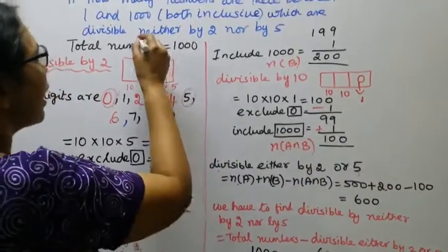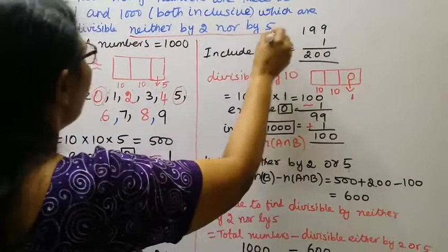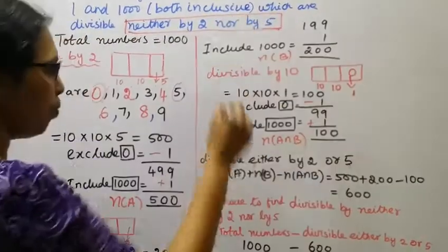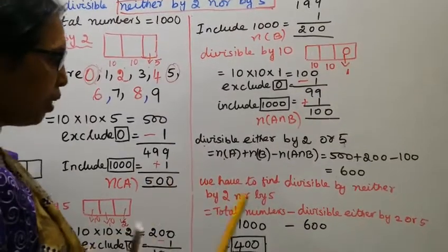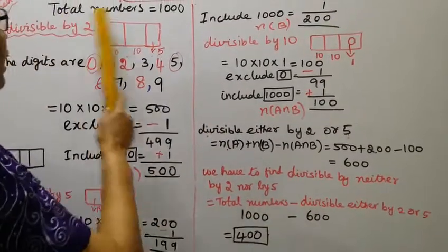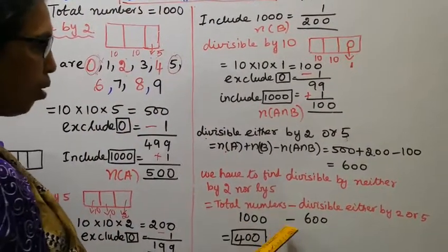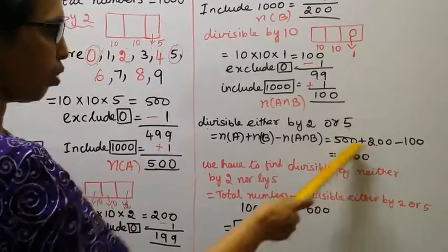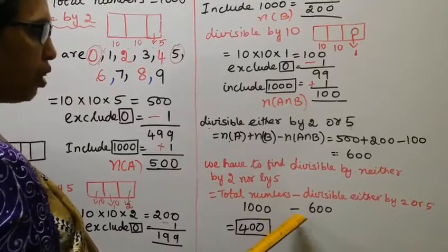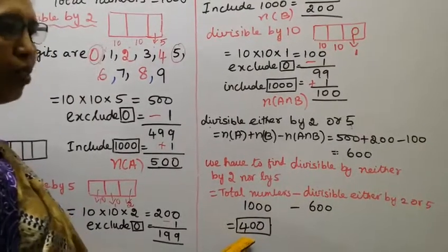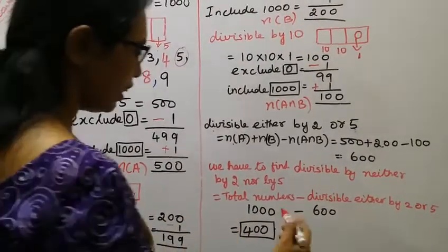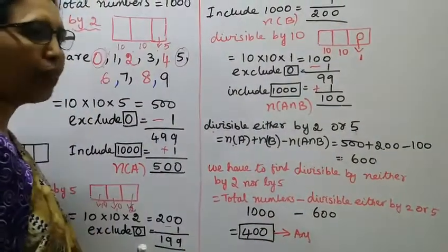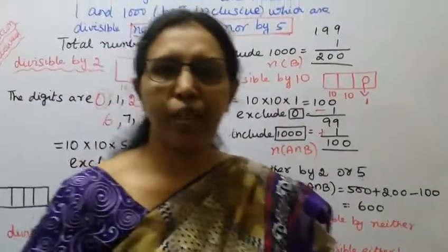The question is neither, which are divisible neither by 2 nor by 5. Total numbers, 1000 minus divisible 2 or 5. 1000 minus 600, 400. And the answer.